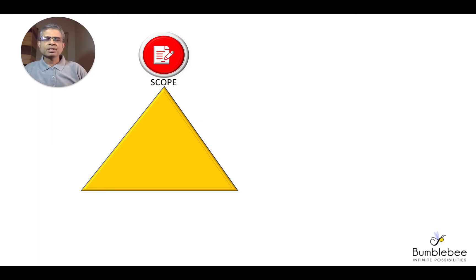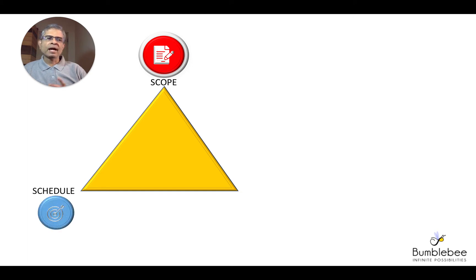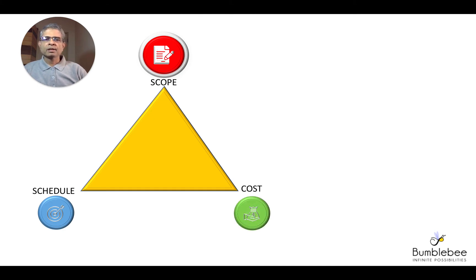The second aspect, or the second side of the PM triangle, is the time or the schedule of the project. The third constraint is the cost, the budget, or the resources.